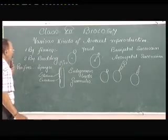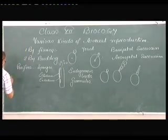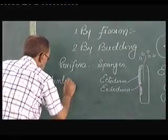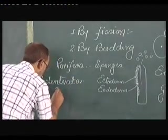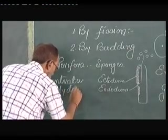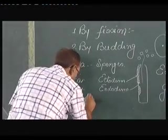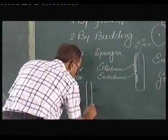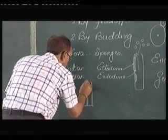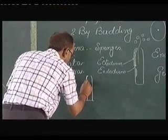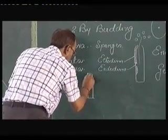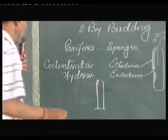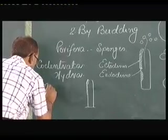Another type of budding is found in the members of Cnidaria, like hydra. Hydra also has a cylindrical body consisting of two layers of tissue: outer ectoderm and inner endoderm. Between the ectoderm and endoderm, there is a jelly-like layer known as mesoglea.